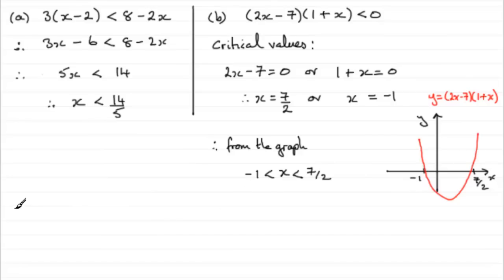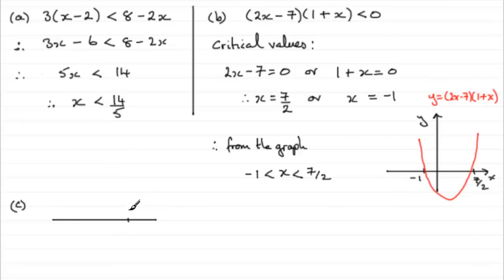Okay, that's part b. Now for part c, we've got to find the range of values of x which satisfy both these inequalities. To do this, what I do is a number line. A number line for the first one — we can see that x has got to be less than 14 fifths. So if I put 14 fifths on the number line, we want to be less than 14 fifths. That's got to be an open circle, being less than, and we want values of x back in this direction. If it was less than or equal to, we'd fill this in with a solid value.